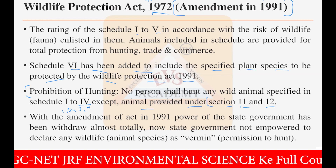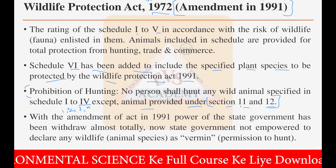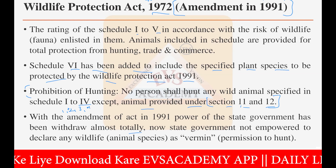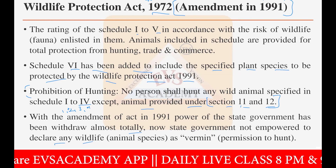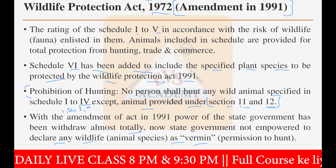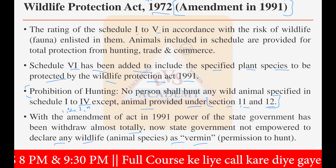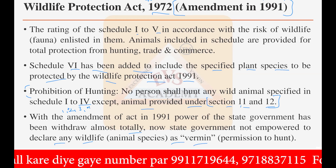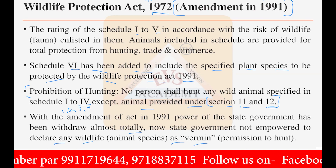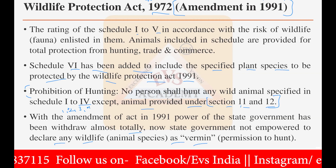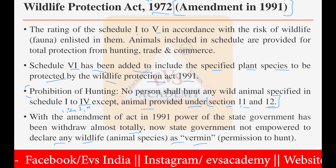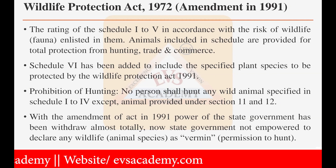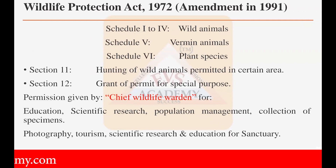Vermin animals are provided under section 11 and section 12. With the amendment in the act in 1991, the power of the state government has been withdrawn almost totally — the state government is no longer empowered to declare any wildlife animal species as vermin. The act already has the list of vermin animals, and state governments cannot modify that list; all other animals are totally prohibited from hunting.